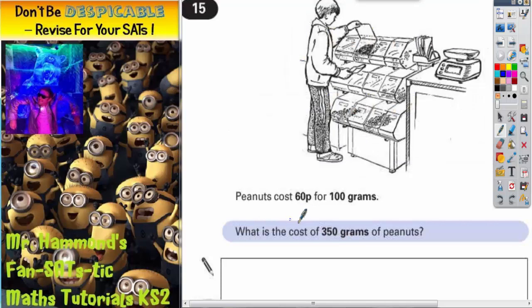Question 15. Peanuts cost 60p for 100 grams.